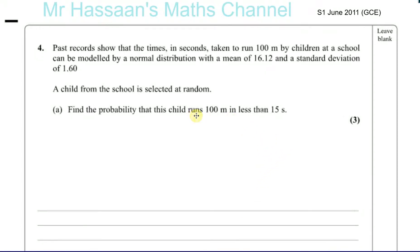S1 from June 2011 GCE, question number 4. Past records show that the times in seconds taken to run 100 meters by children at a school can be modeled by a normal distribution with a mean of 16.12 and a standard deviation of 1.6.